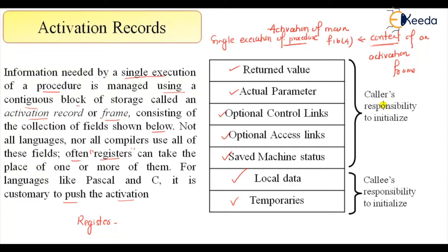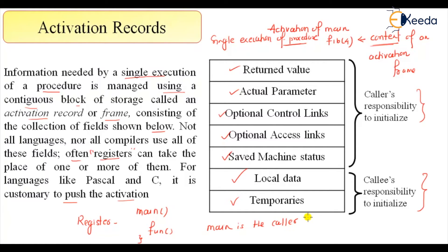There are a few responsibilities of the caller and a few responsibilities of the callee function. If I say main calls fun, then main is the caller function and fun is the callee function. The callee function's responsibility covers local data and temporaries, while the caller function's responsibilities cover the remaining fields.